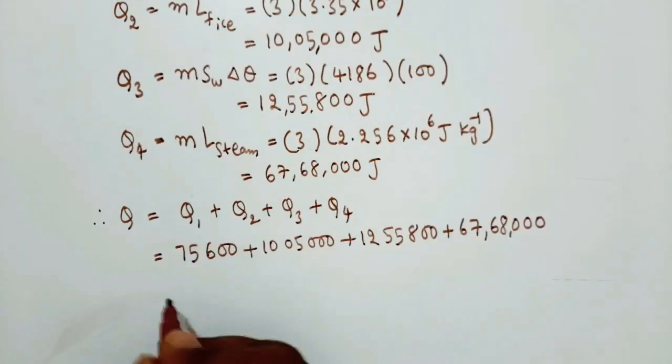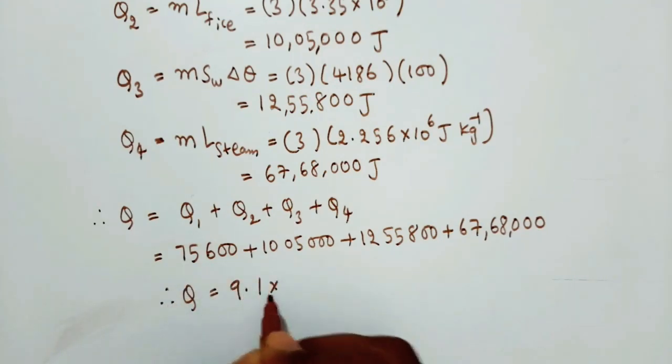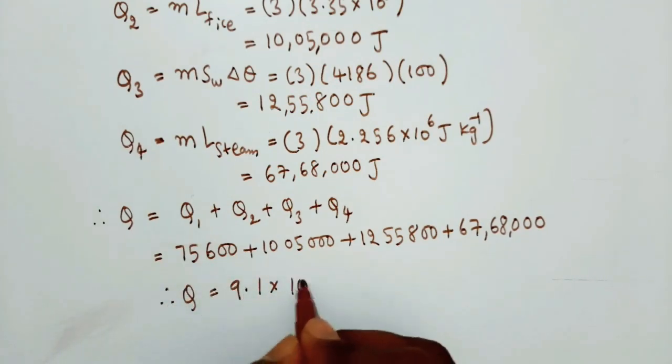Therefore Q equals Q1 plus Q2 plus Q3 plus Q4, which is 75,600 plus 10,05,000 plus 12,55,800 plus 67,68,000 joules. Finally, Q is equal to 9.1 times 10 to the power 6 joules.